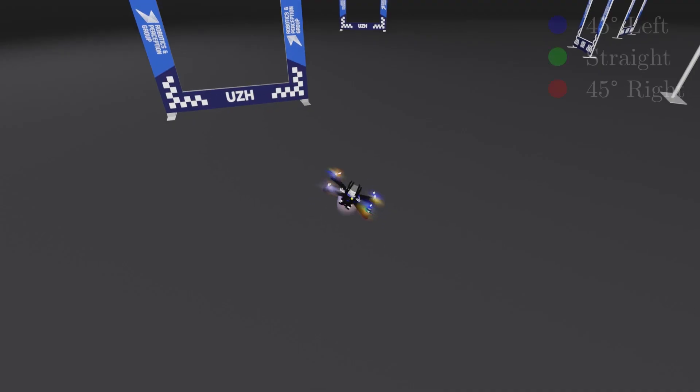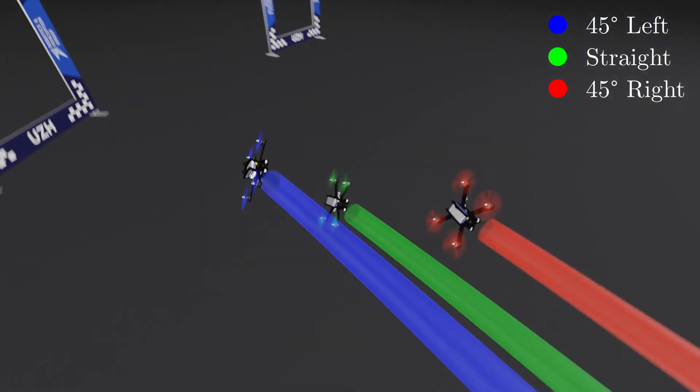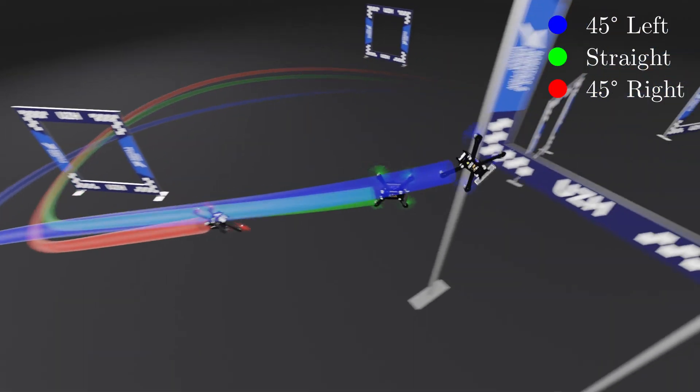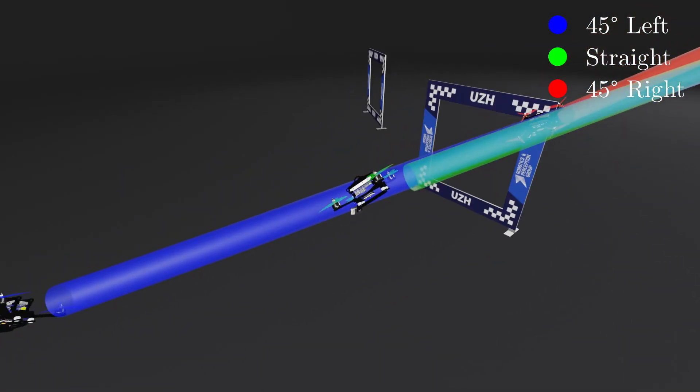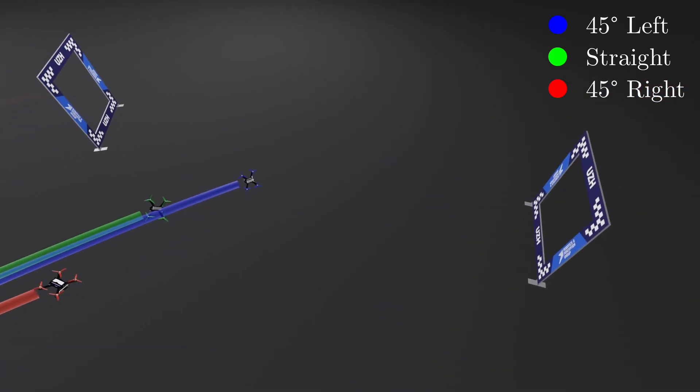Instead of thrust constraints, a user might want to guide the viewing direction. Here you can see the three drones flying on a complex drone racing track. And the blue drone is tasked to look 45 degrees to the left with respect to the next waypoint, the green one straight at it, and the red one 45 degrees to the right.